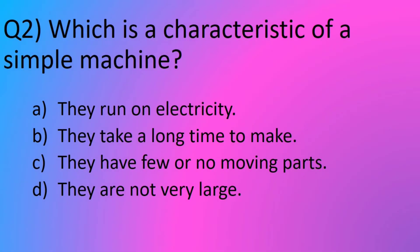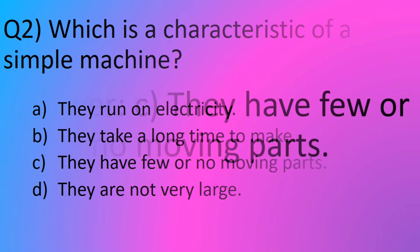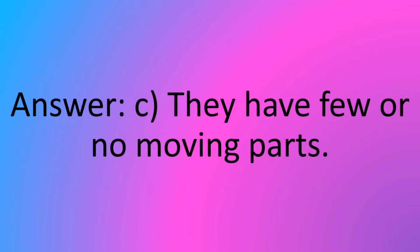Question number 2. Which is the characteristic of a simple machine? Option A, they run on electricity. Option B, they take a long time to make. Option C, they have few or no moving parts. Option D, they are not very large. The answer is option C, they have few or no moving parts.